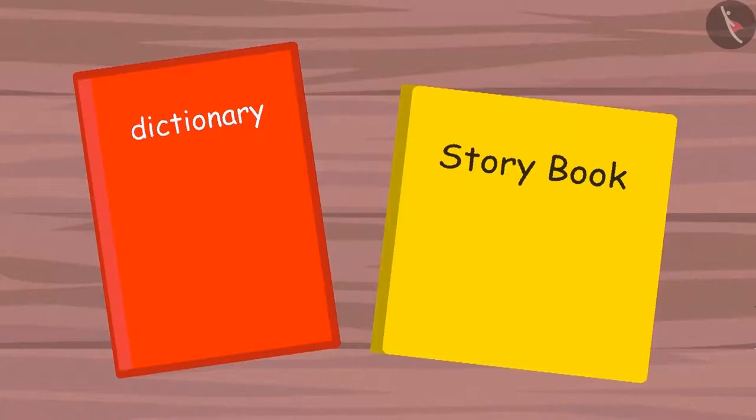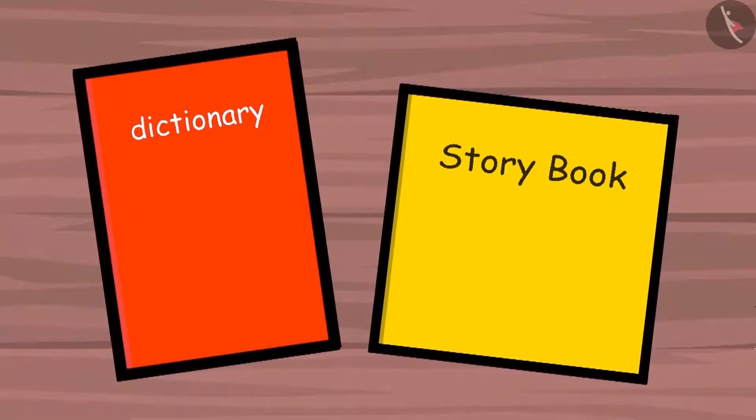Different shapes are measured based on how much space they occupy. Both these books are a quadrilateral. Meaning, they have four sides or edges.